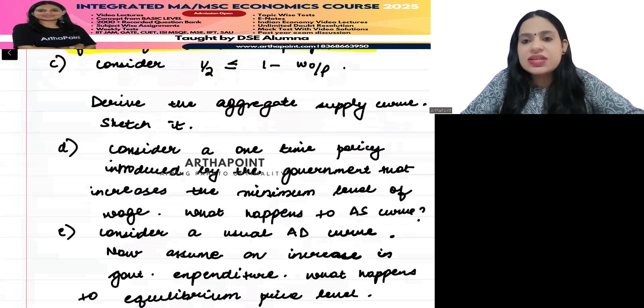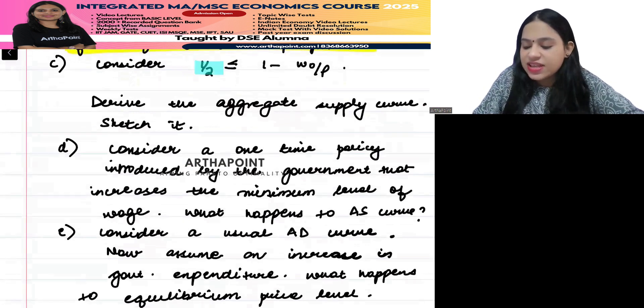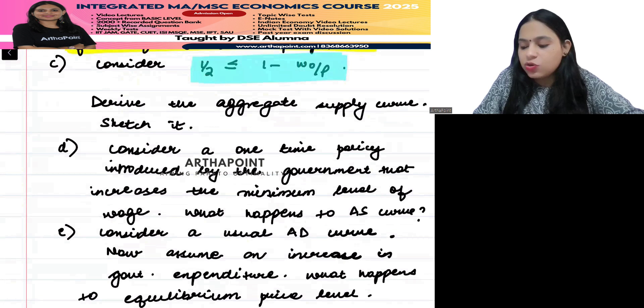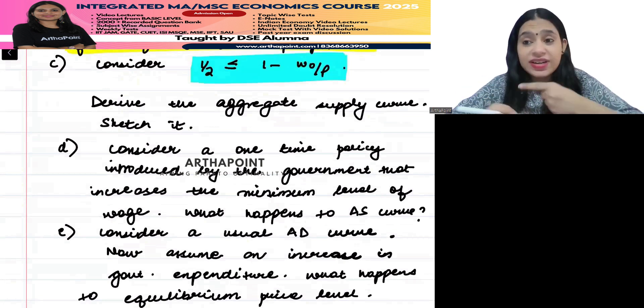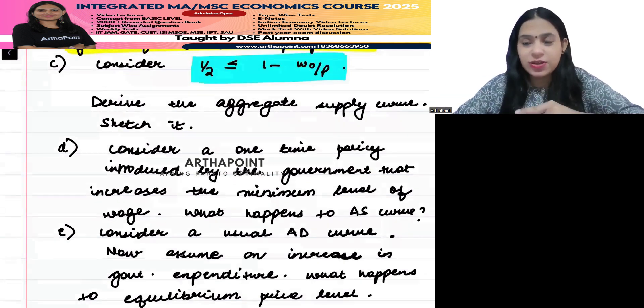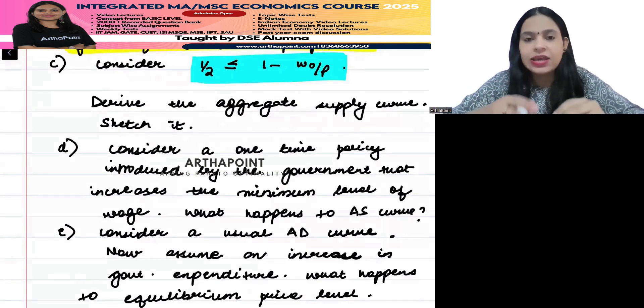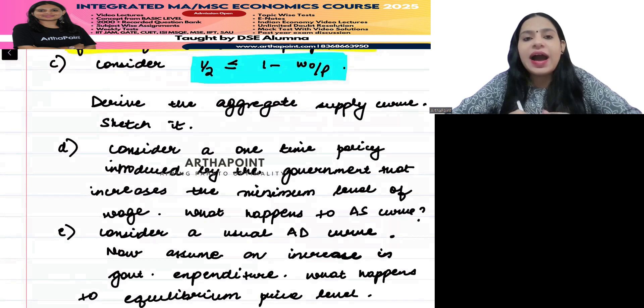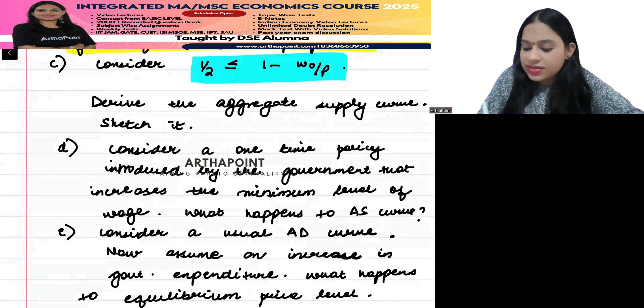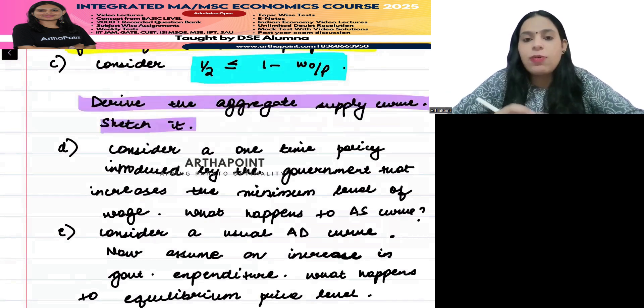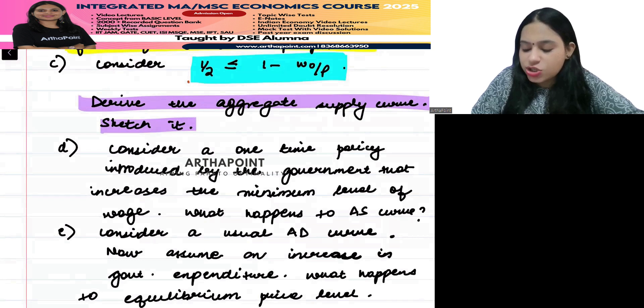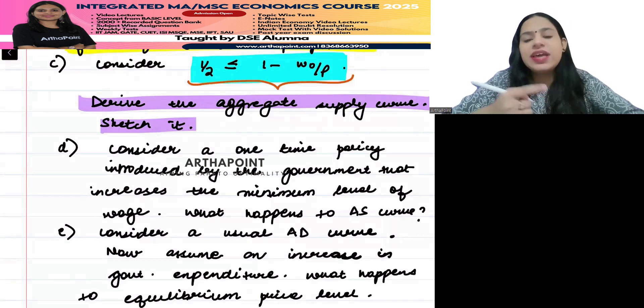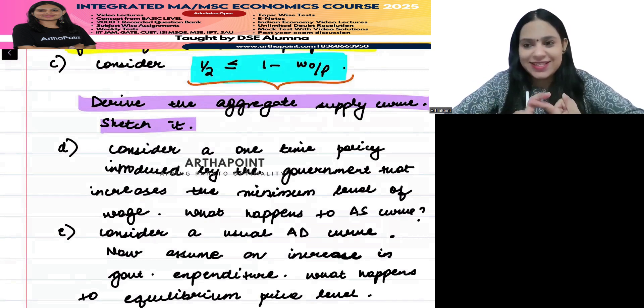Part number three: consider that half is less than 1 minus W naught by P. Now you will derive this condition while solving the question. That is why it is given. So assume that half is less than 1 minus W naught by P. Then derive the aggregate supply curve and sketch it. For this condition, you need to derive the AS curve and sketch the AS curve.